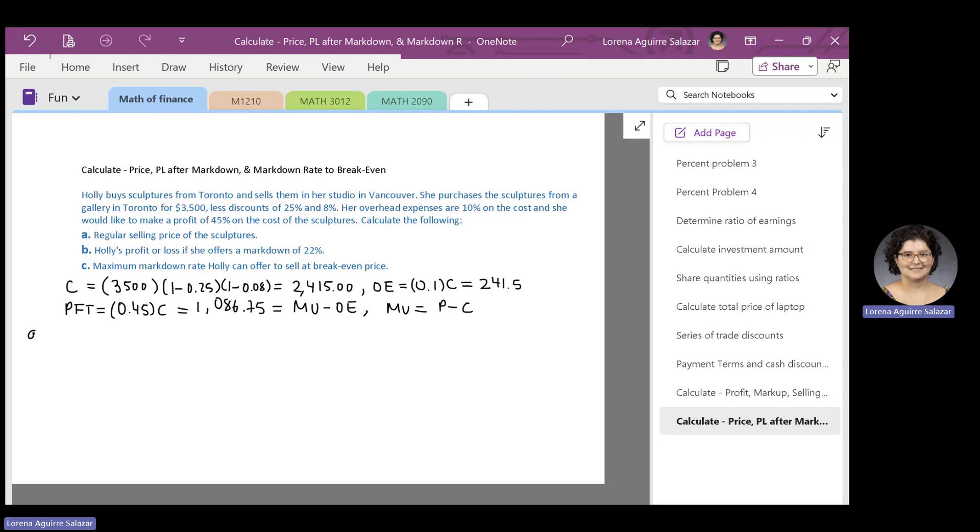So, let's solve part A of this problem. We need to find the regular selling price of the sculptures. That corresponds to P. We need to find P, and we have C, we have OE, and we have PFT. There is a way to write P in terms of the variables we have, C, OE, and profit.